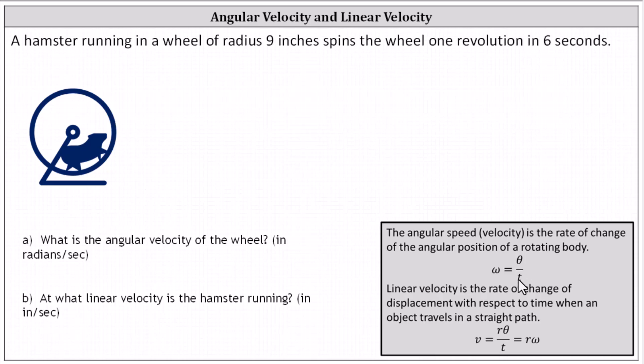In this case, because the wheel is spinning one revolution in six seconds, one revolution is equal to two pi radians. Therefore, the angular velocity omega equals the change in theta divided by the change in time, which in this case is two pi radians divided by six seconds.